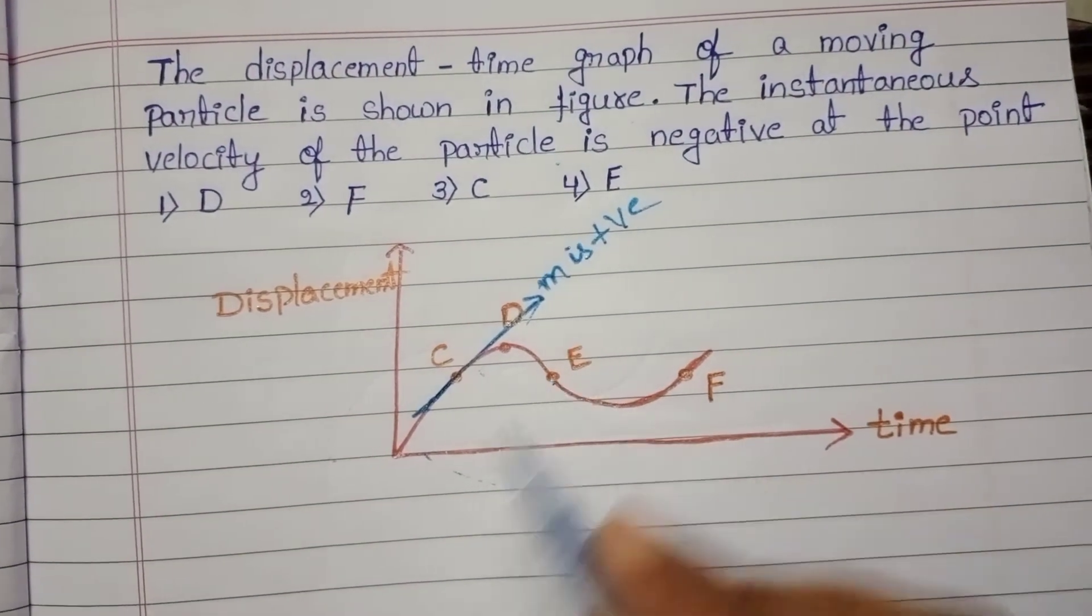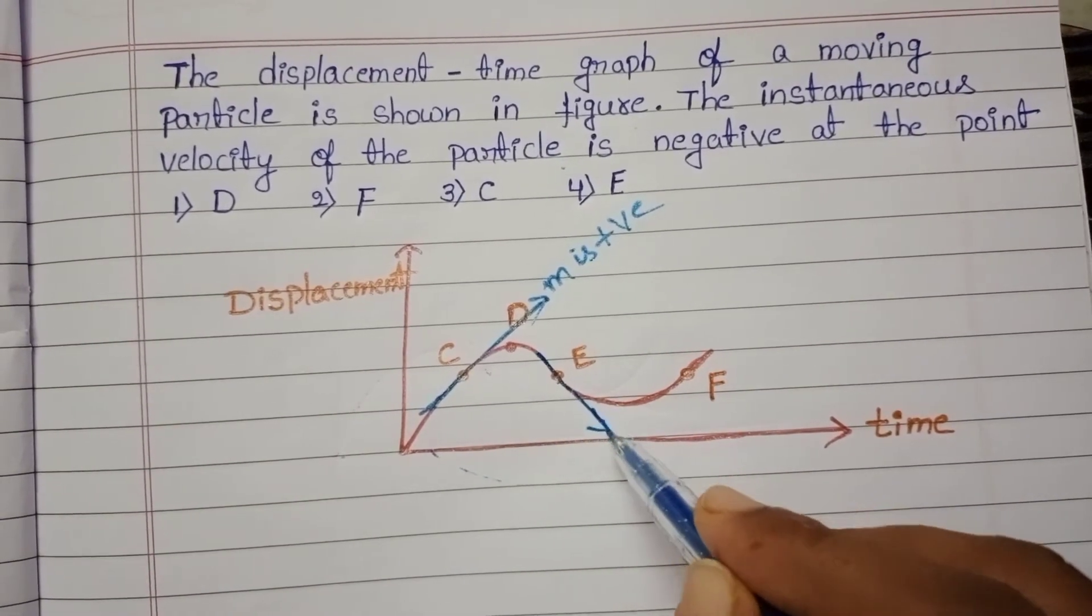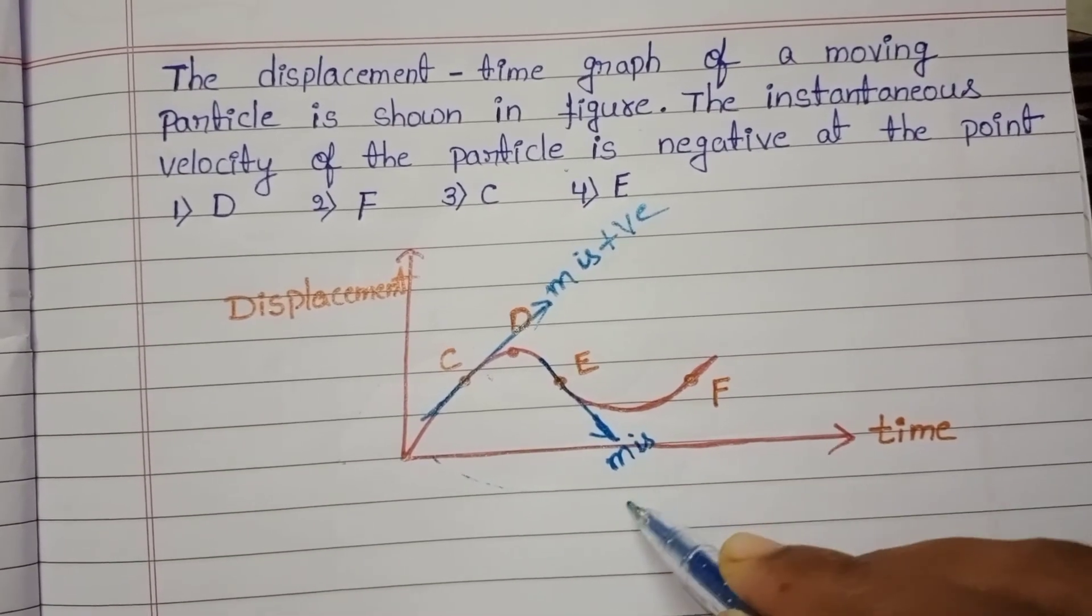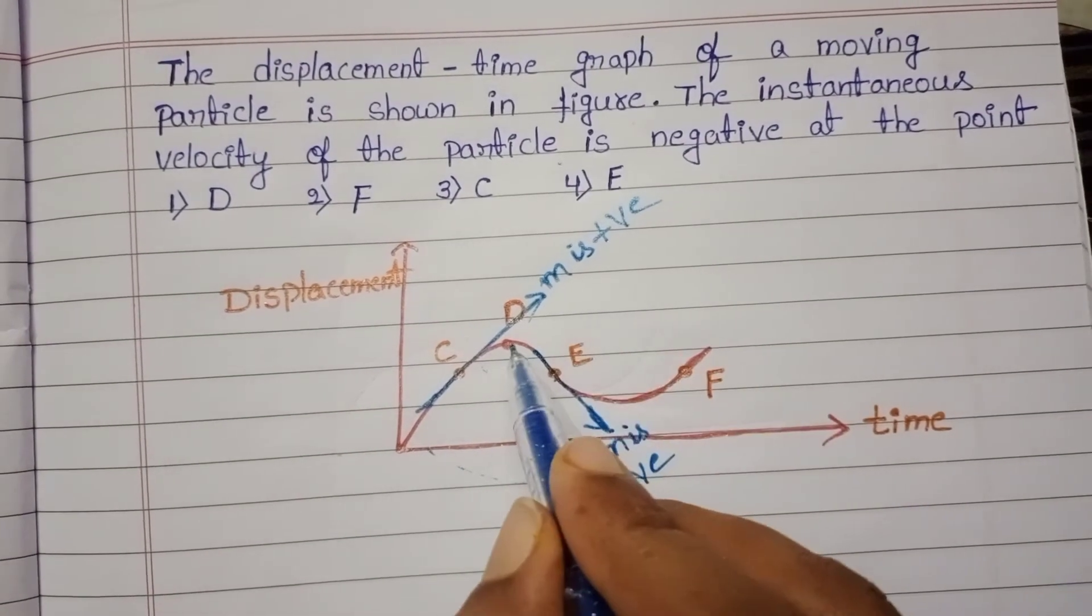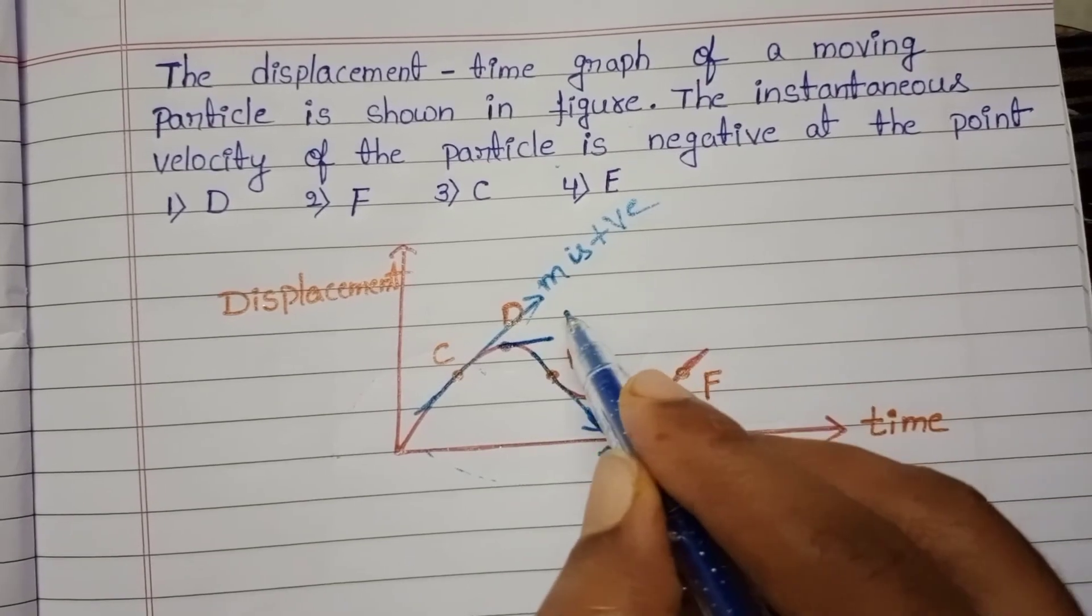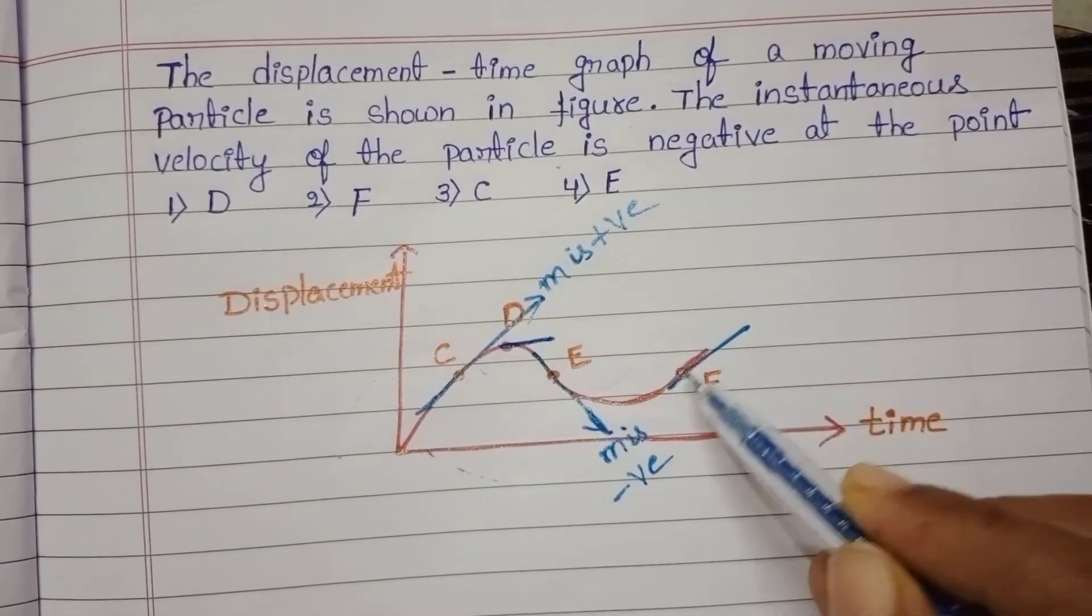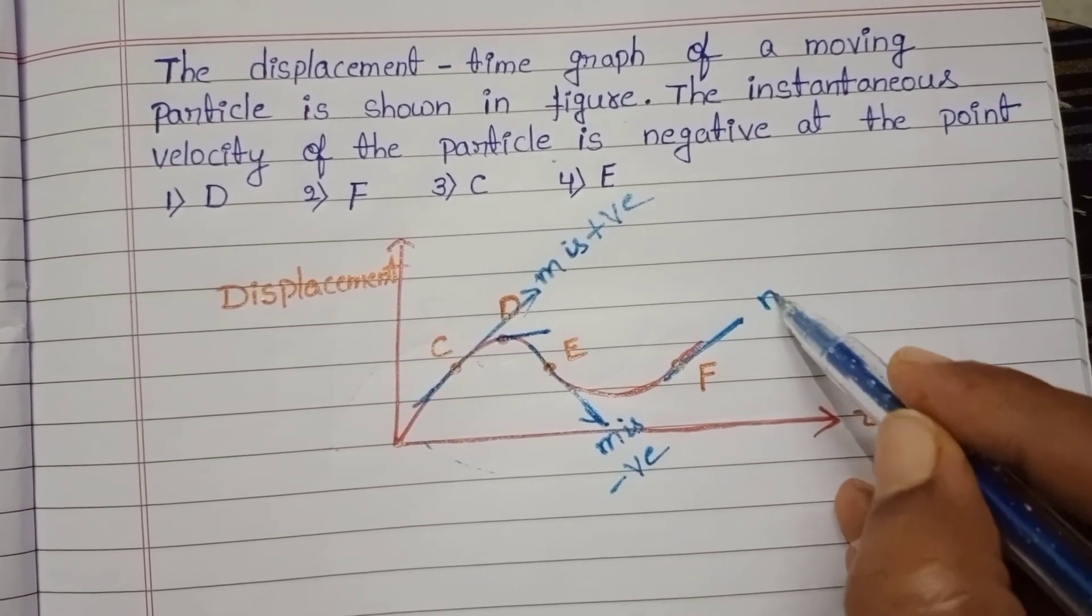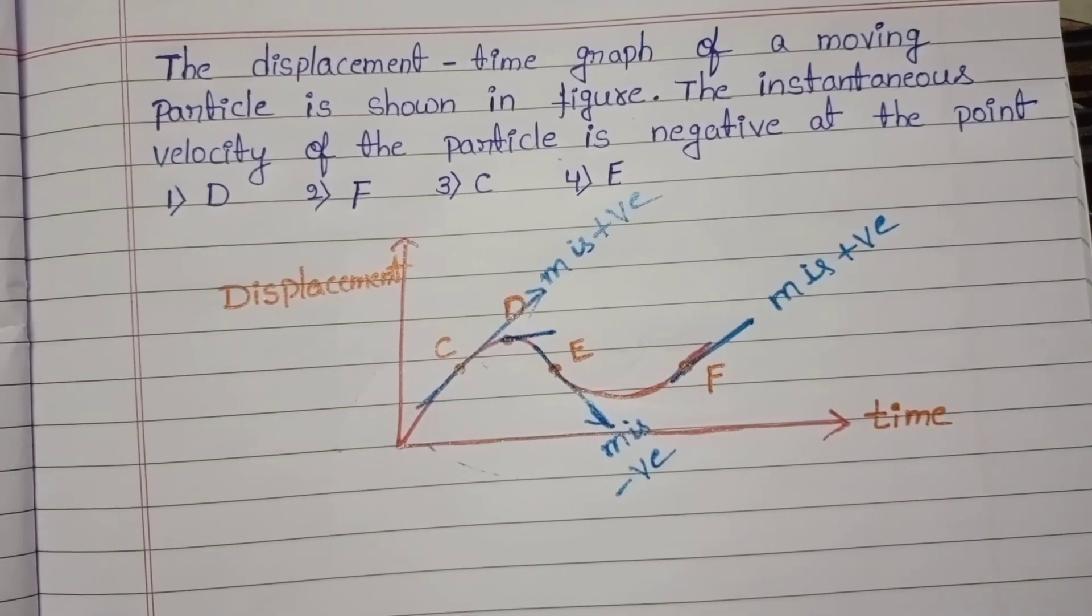And at E point, so this line is acting in downward direction. So slope is negative and at D point, this is straight line and at E point acting in upward direction. Here also slope is positive.